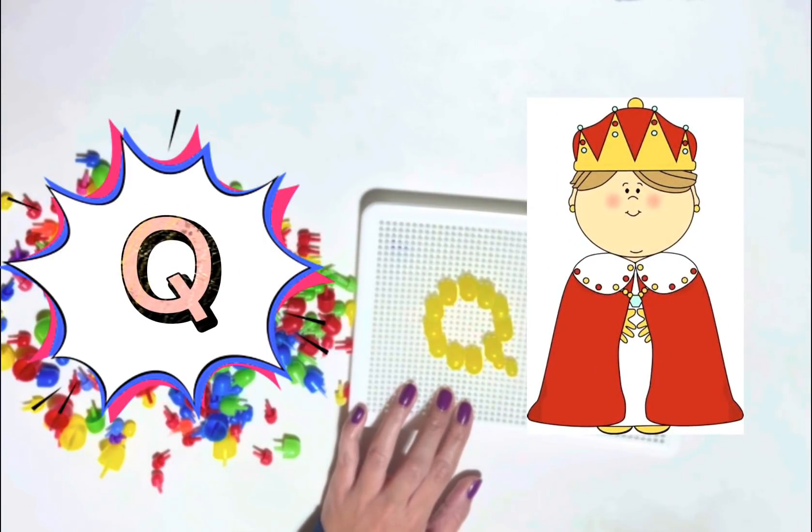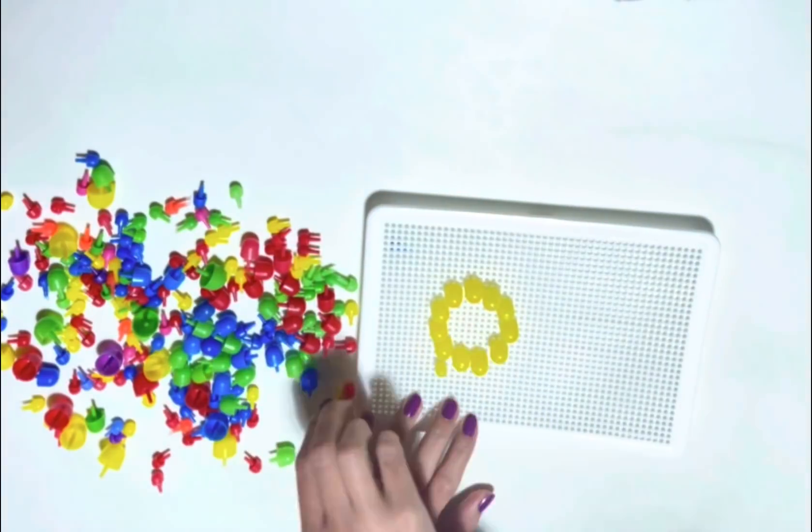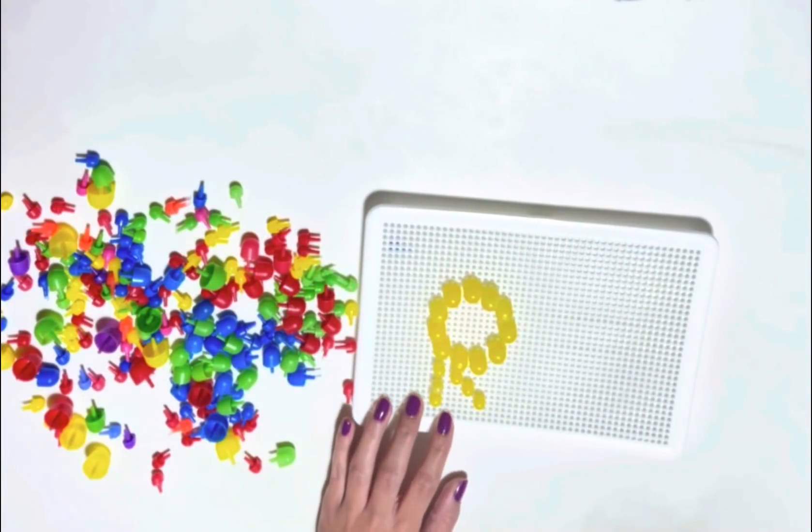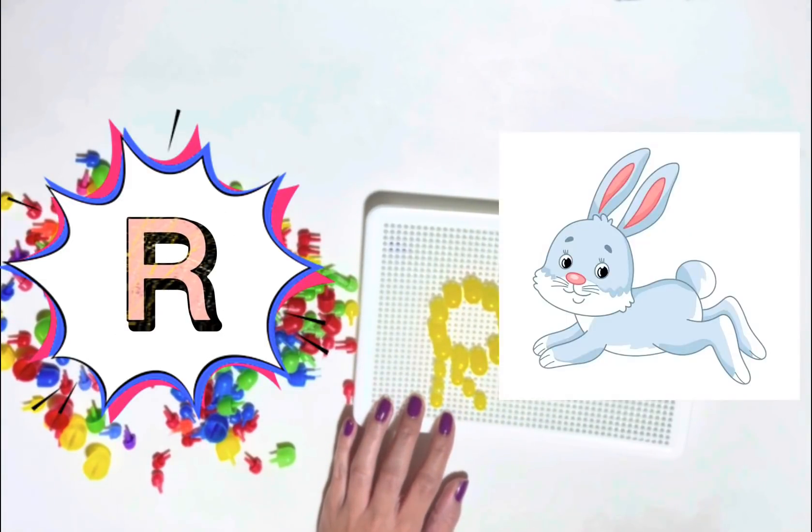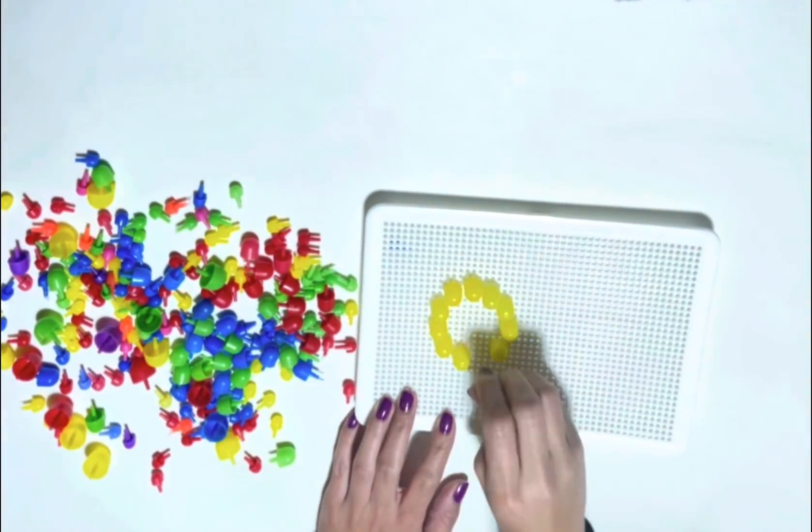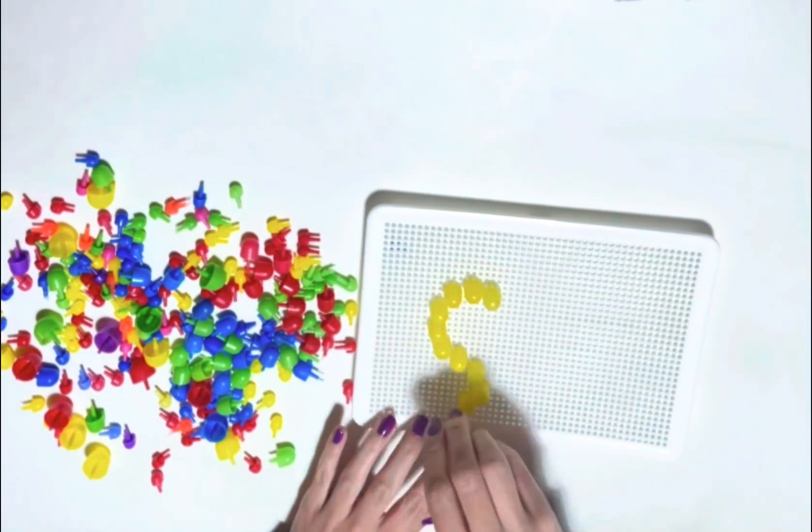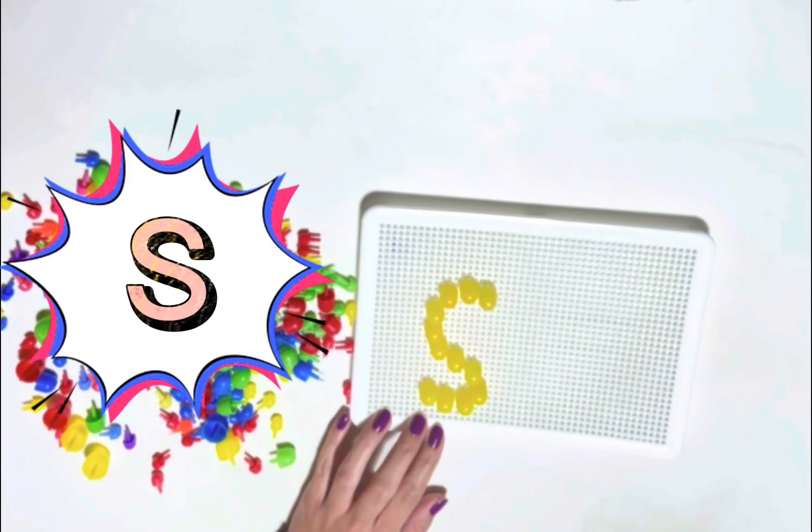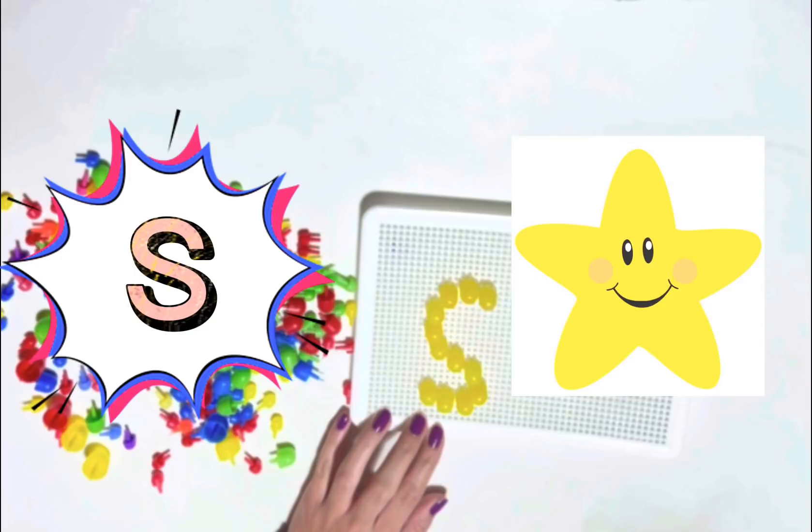Q is for Queen. R is for Rocket. S is for Star.